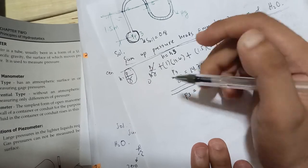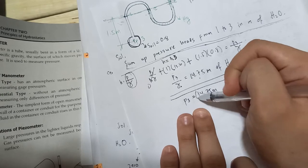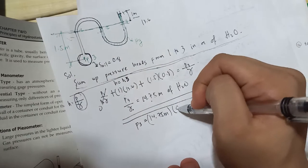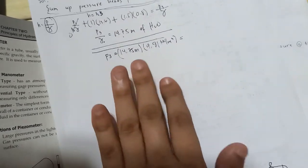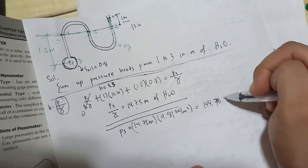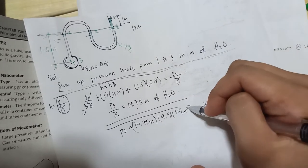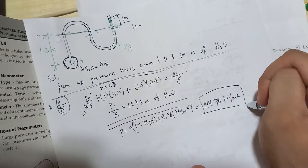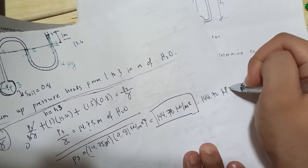We need to multiply the pressure head by the unit weight of water to get actual pressure. So P equals 14.75 meters times 9.81 kN per cubic meter, giving 144.70 kilopascal.